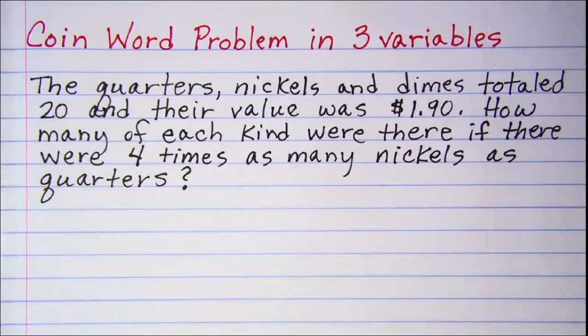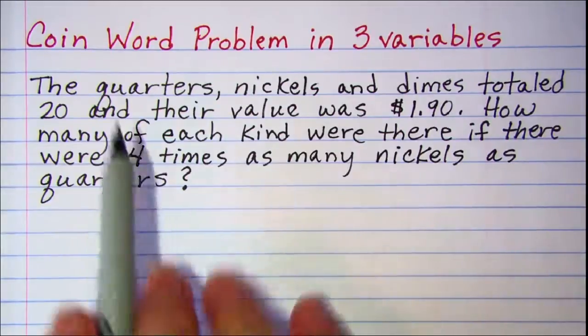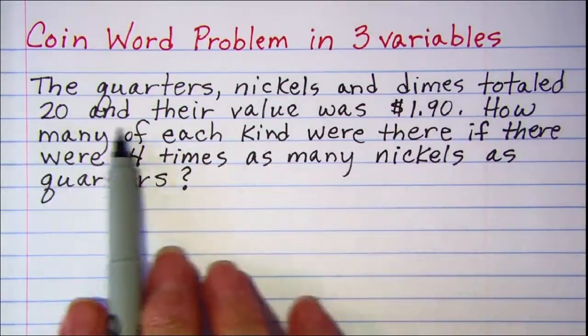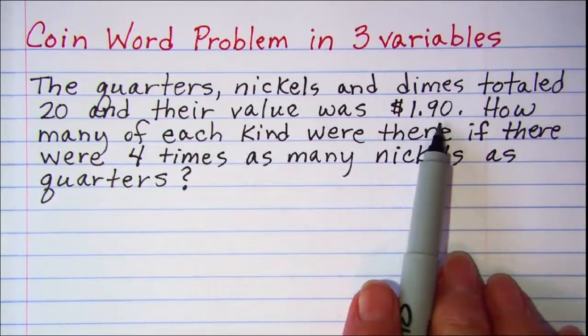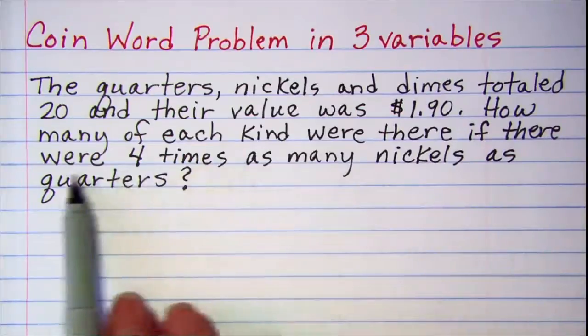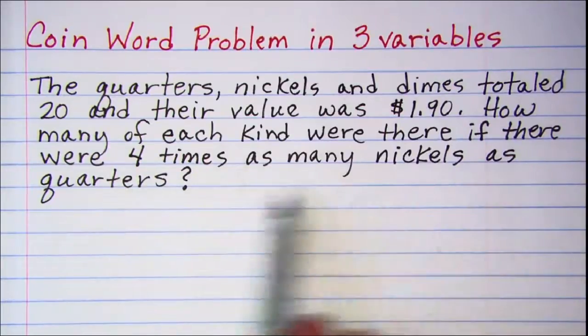In this video we'll be working a coin word problem in three variables. The quarters, nickels, and dimes totaled 20 and their value was $1.90. How many of each kind were there if there were four times as many nickels as quarters?